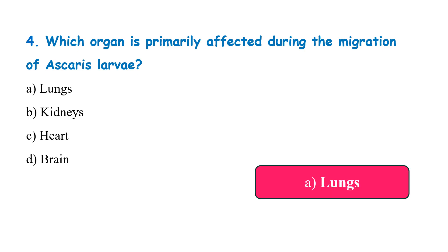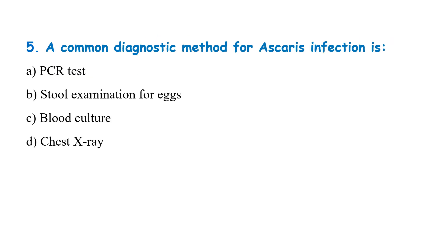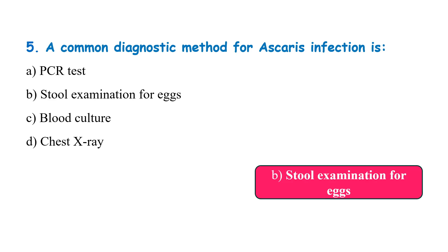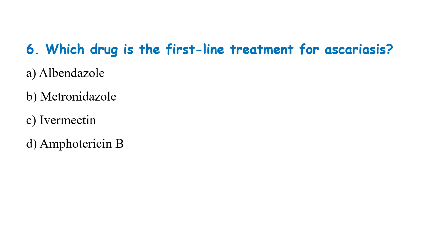A common diagnostic method for Ascaris infection is PCR, stool examination for eggs, blood culture, or chest X-ray? The correct answer is stool examination for eggs. Which drug is the first line treatment for Ascaris? Albendazole, metronidazole, ivermectin, or amphotericin B? The correct answer is albendazole.